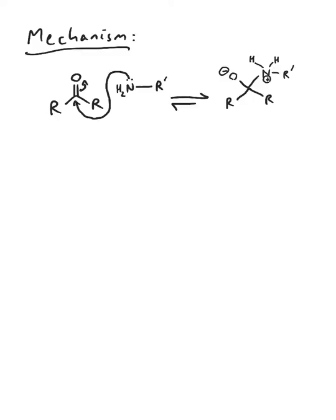We now end up with an ammonium salt and an alkoxide on the same molecule. So it's safe to say that the alkoxide is going to pick up a proton from the ammonium. So there is a proton rearrangement, giving us a hemiaminal.